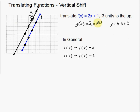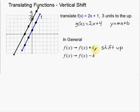Here it's blatantly obvious: if I go 3 units up, all I have to do is add 3 to my function. In general, if I have a function and I want to vertically shift it by adding some number directly to the function, this is going to be shifting up — just as we saw in this example. And if I subtract some number from the function, this is going to be a shift down.